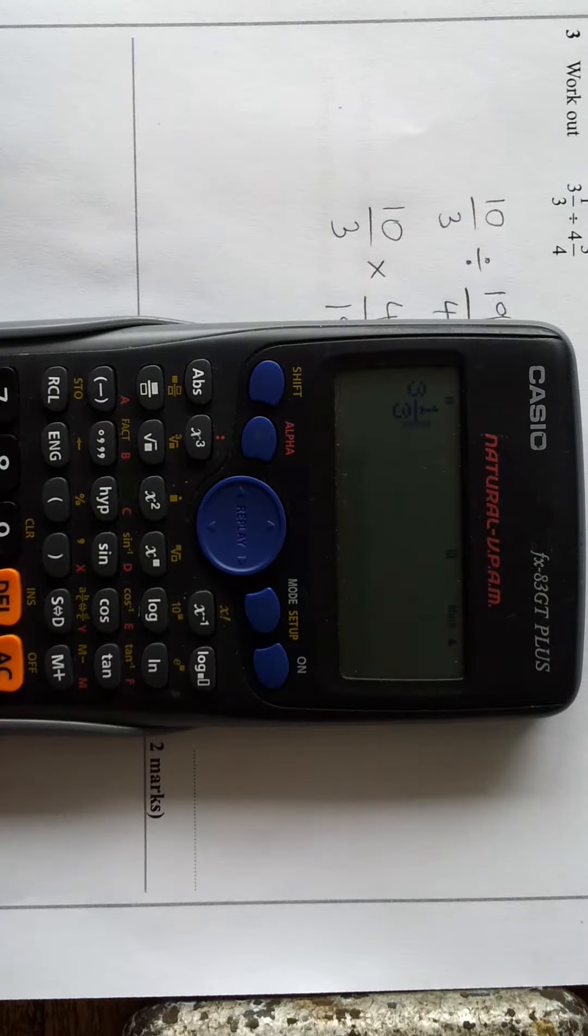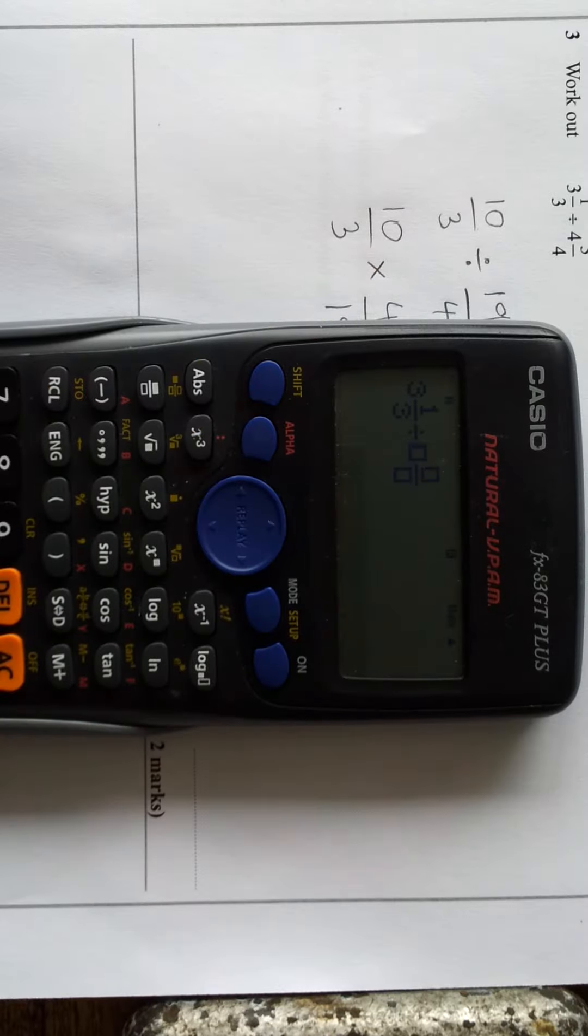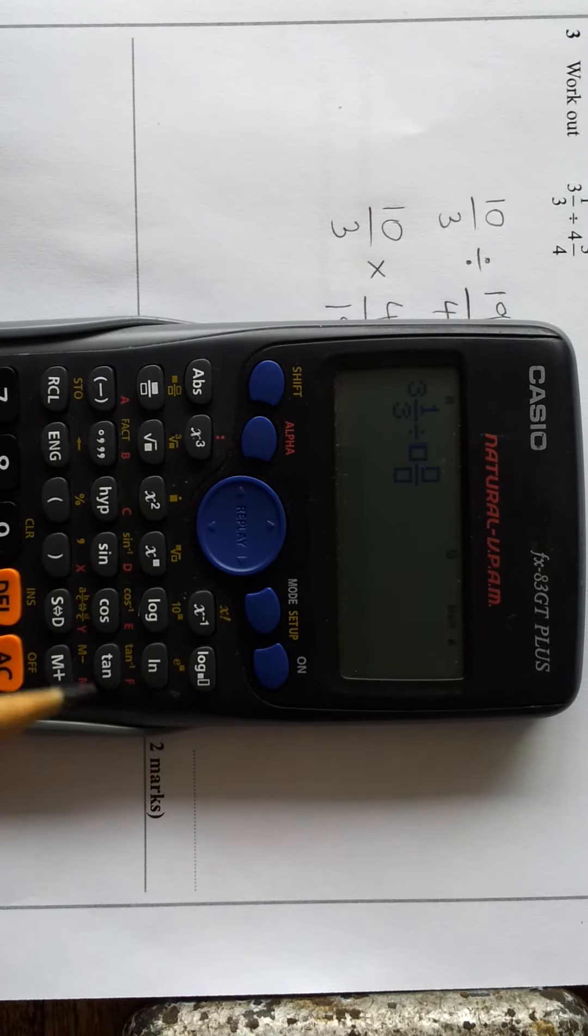Divide by, and then press shift and the fraction button again to get the mixed numbers, and that is four.